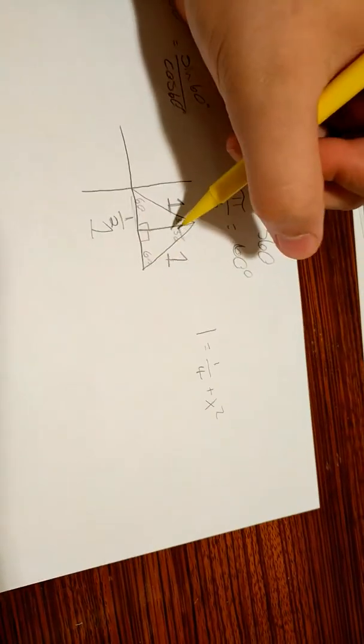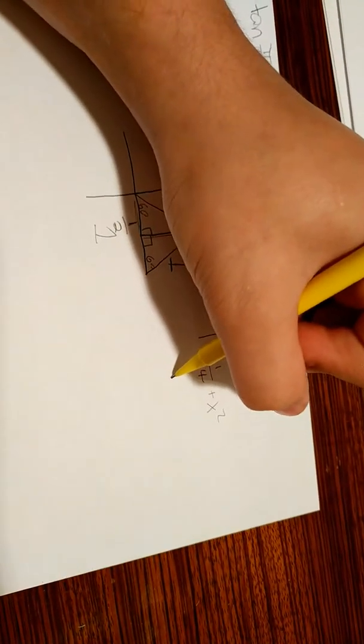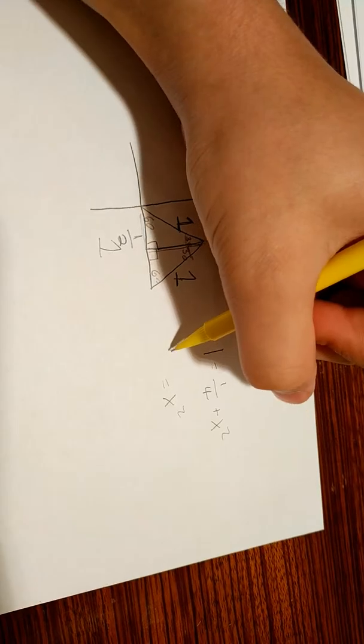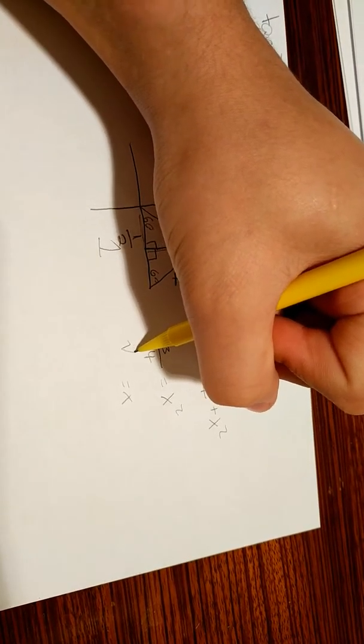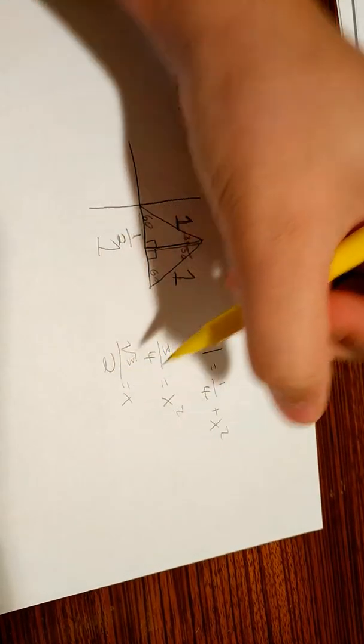And then, x squared, where x is this length over here. So, that x squared is going to be 3 over 4, and x is the square root of 3 over 2.